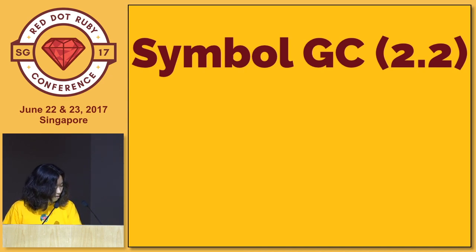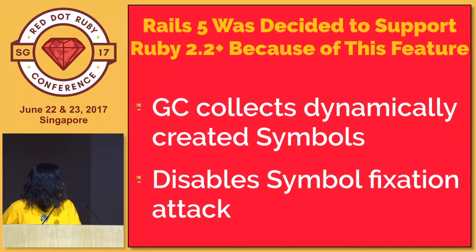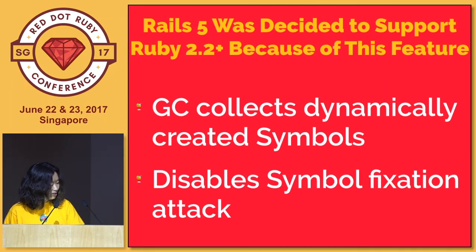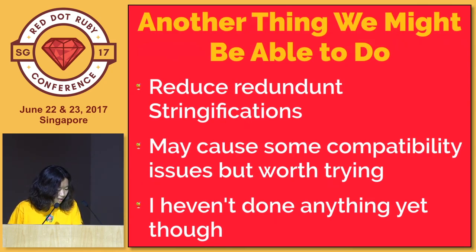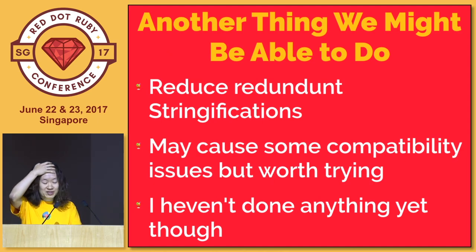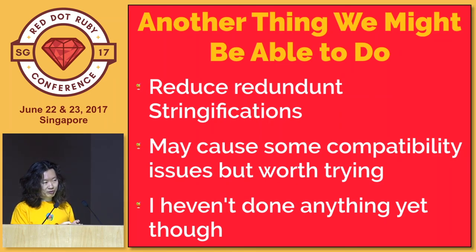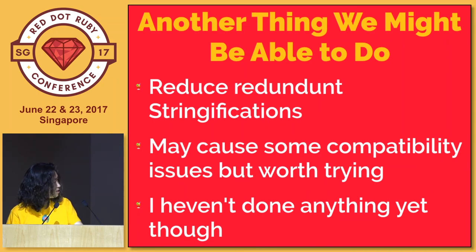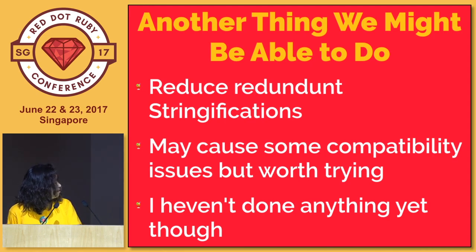Here's another topic concerning performance: Rails 5 does not support Ruby younger than 2.2, just because Ruby 2.2 introduced symbol garbage collection. Before symbol GC, Rails was abusing strings instead of symbols - Rails converts every symbol from the outside world to strings. But we don't have to do this anymore. Just use symbols as they are everywhere in the Rails process. We could reduce garbage strings by doing this.